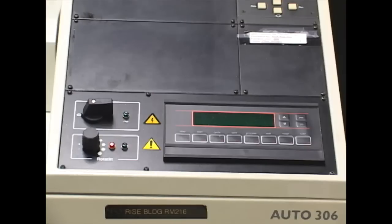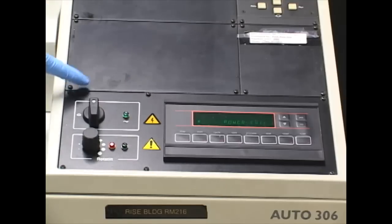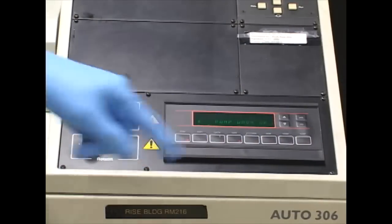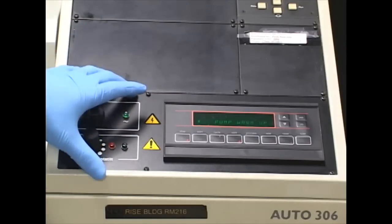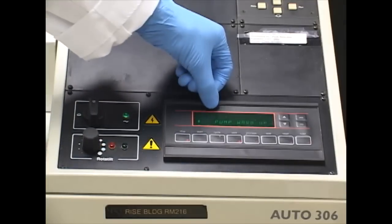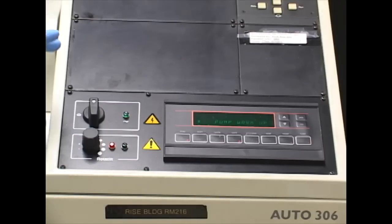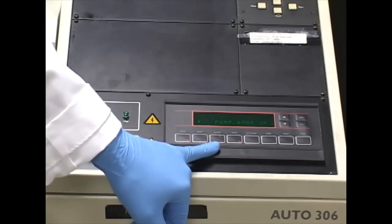To operate our thermal deposition instrument, we first turn on our main power switch from zero to one. Then we press the reset button and then the start button. Keep in mind that we have to turn on the chiller at the same time. Now the internal pump is being warmed up, getting ready for our thermal deposition. This procedure will take about 25 to 30 minutes. Once the pump is ready, the cycle display light will light up.